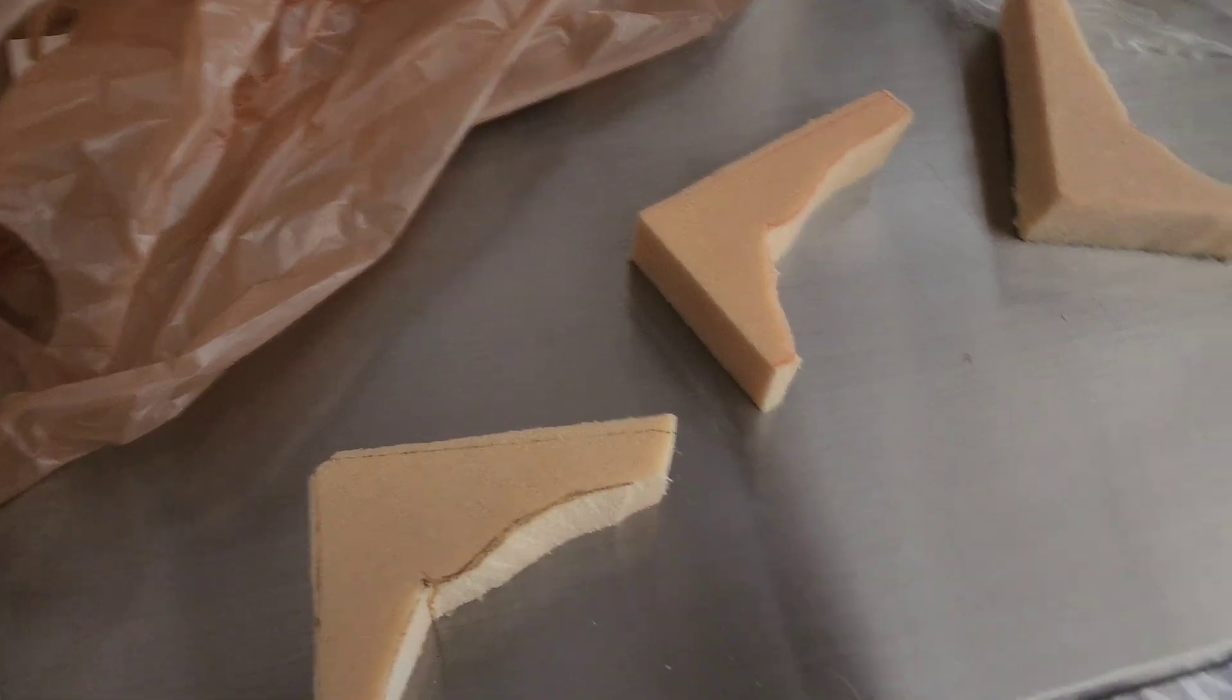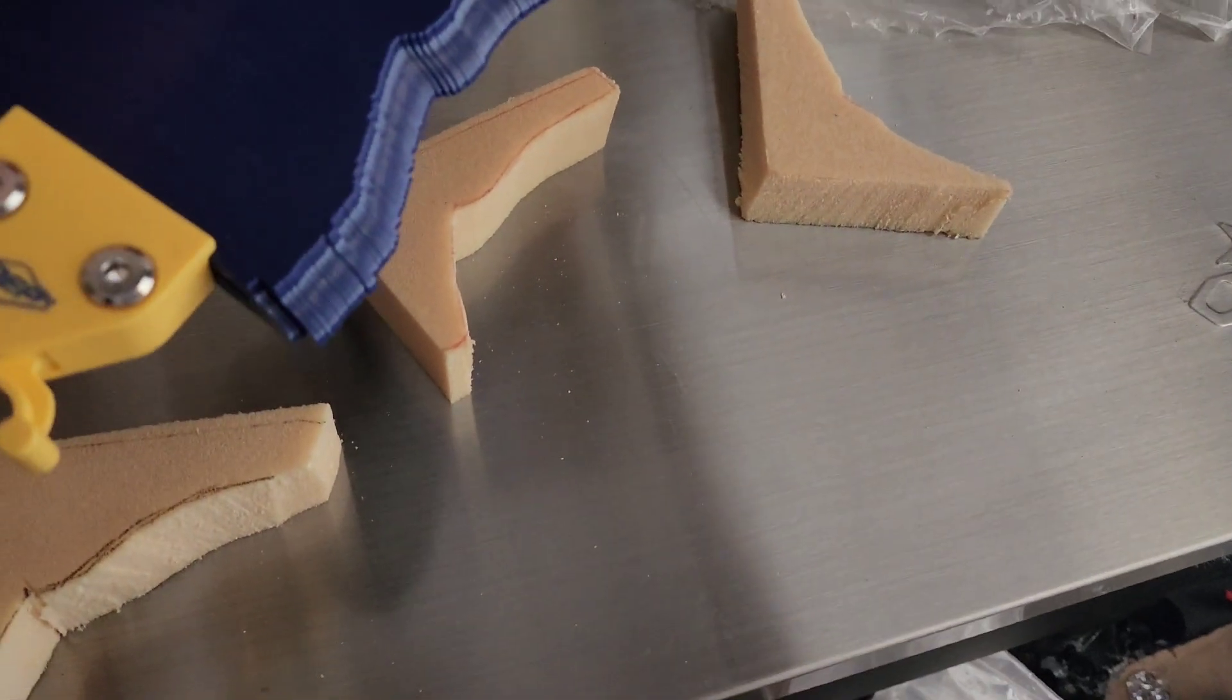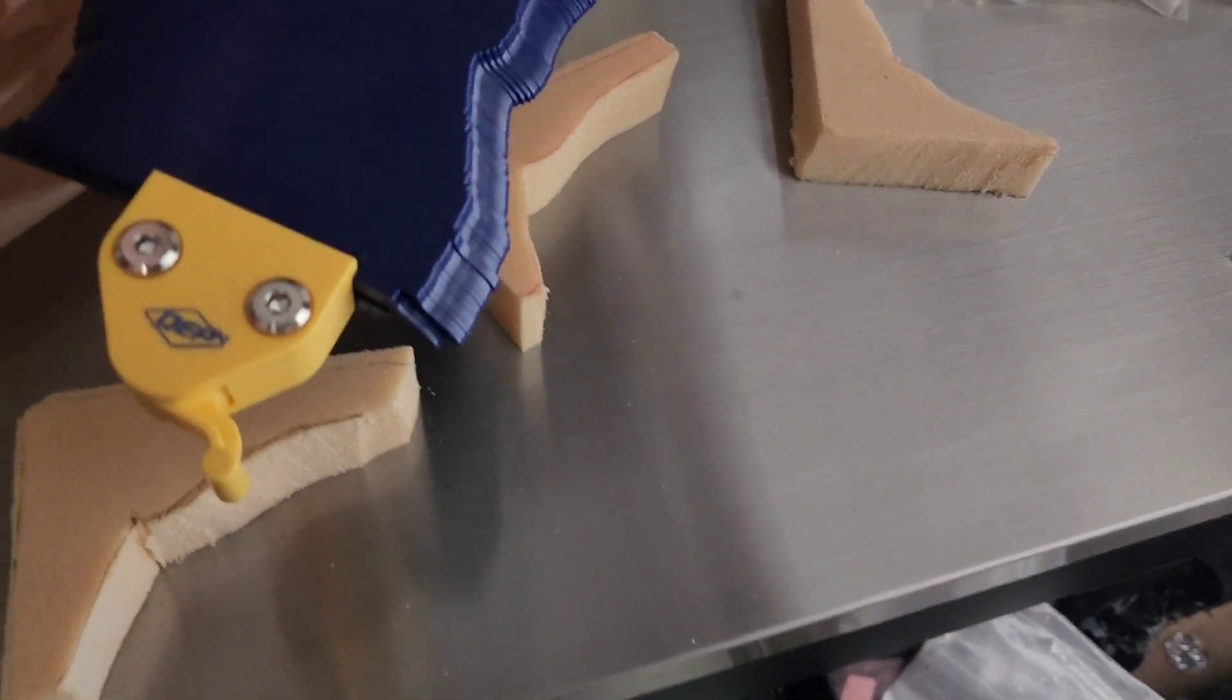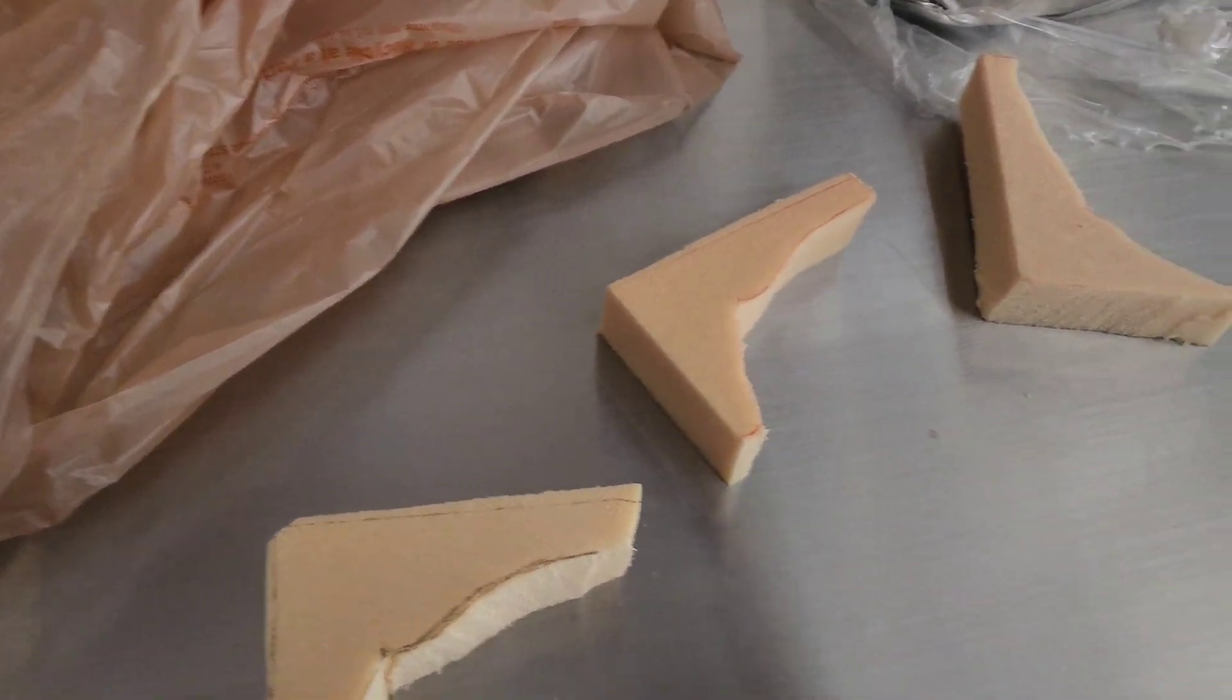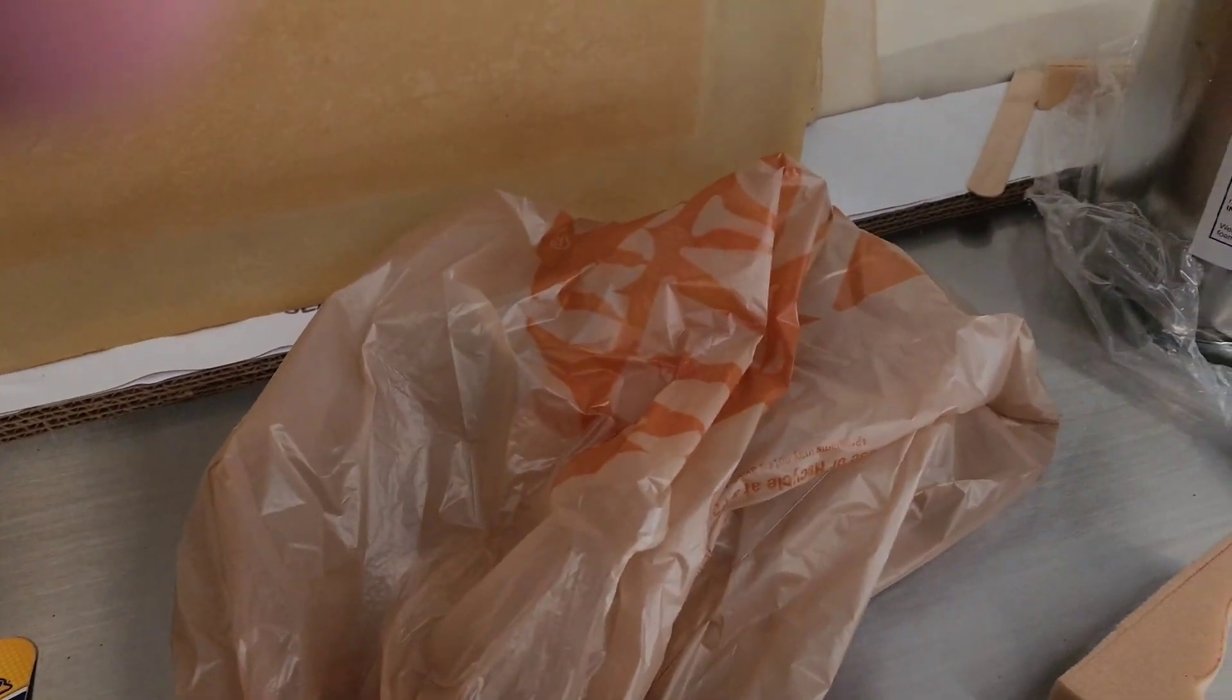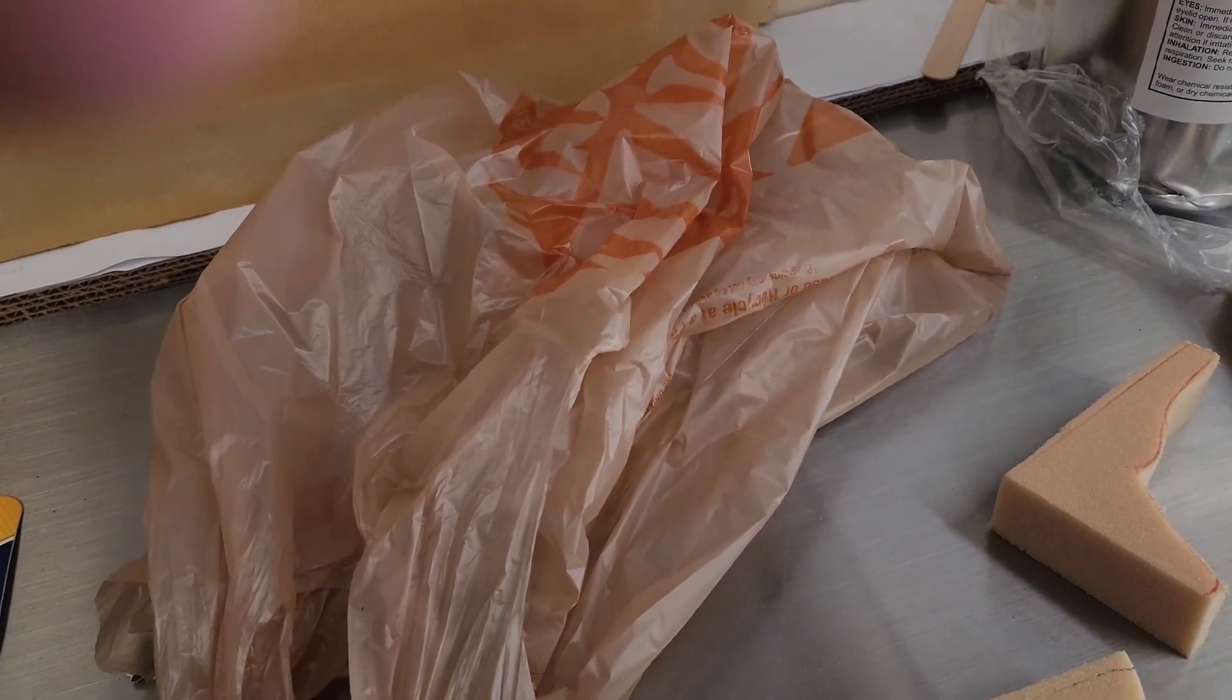Once I have the profilometer or contour profile, I can put it onto the part and after you figure out what angle it needs to go on, then you just trace it with a pen or a pencil onto the foam. I've been using a little saw to cut the foam along that line, and it gets really close if you take your time when you're doing it.